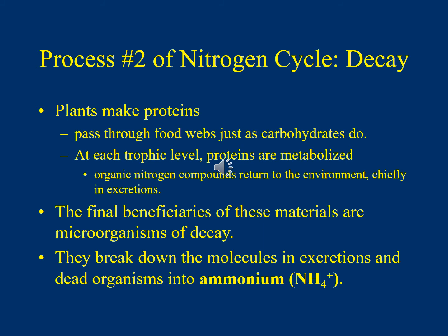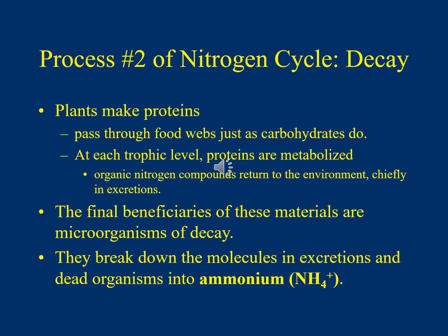The second nitrogen cycle process is decay. Plants make proteins that pass through the food web; at each trophic level, proteins are metabolized and nitrogen compounds return to the environment through excretion. Microorganisms break down manure and waste from all organisms — including bacterial secretions — and much of it is broken down into ammonium, which is a form plants can really utilize.